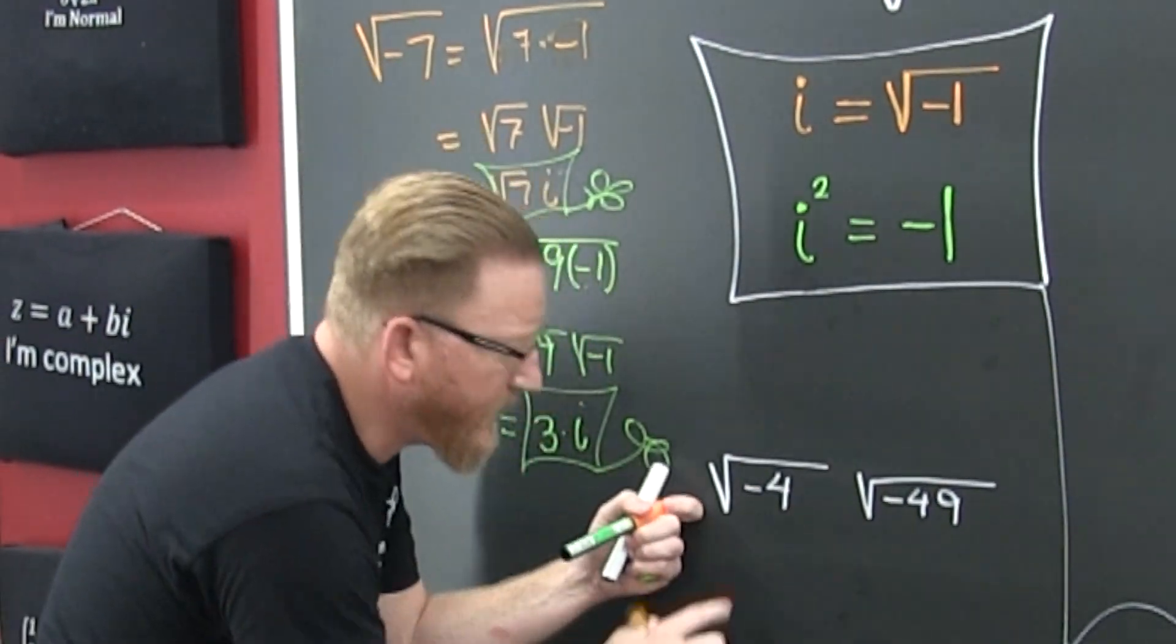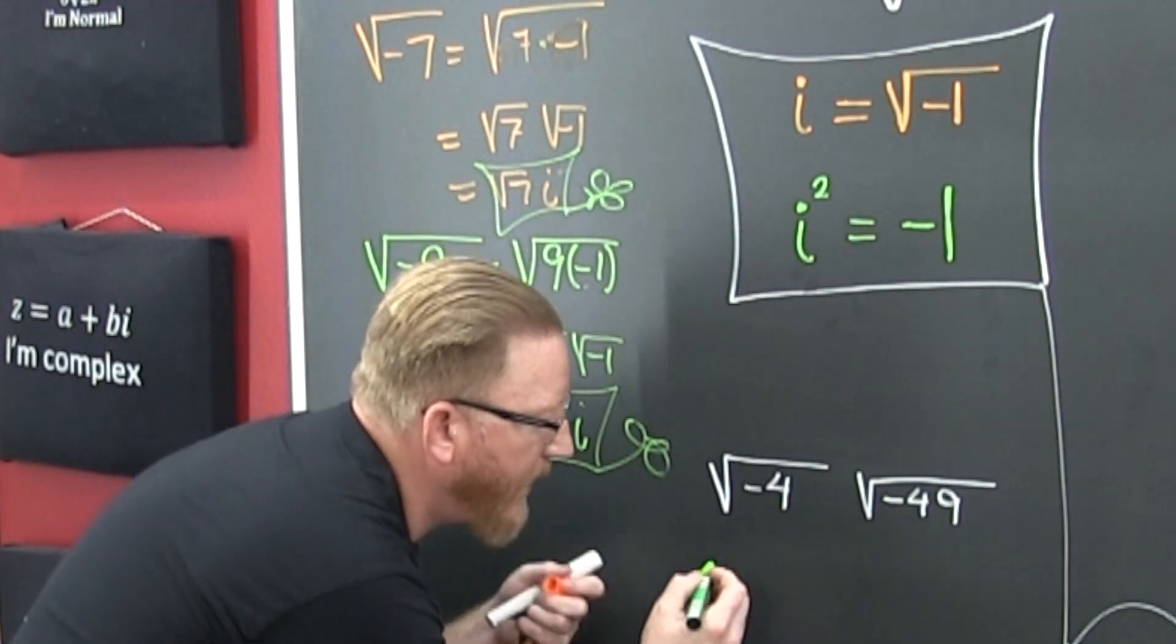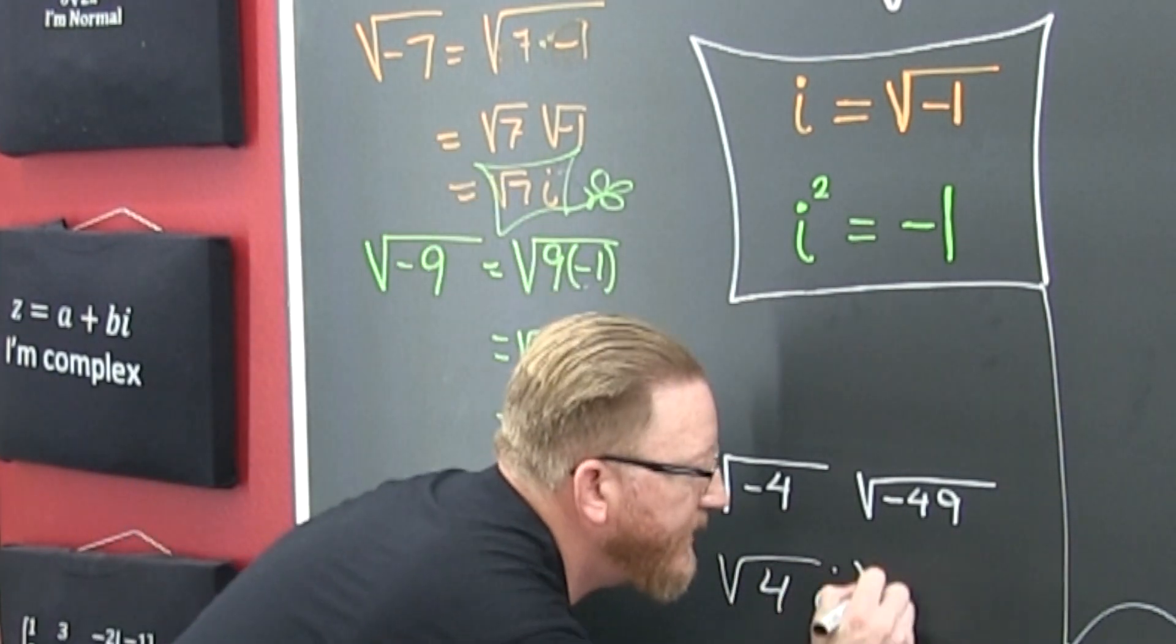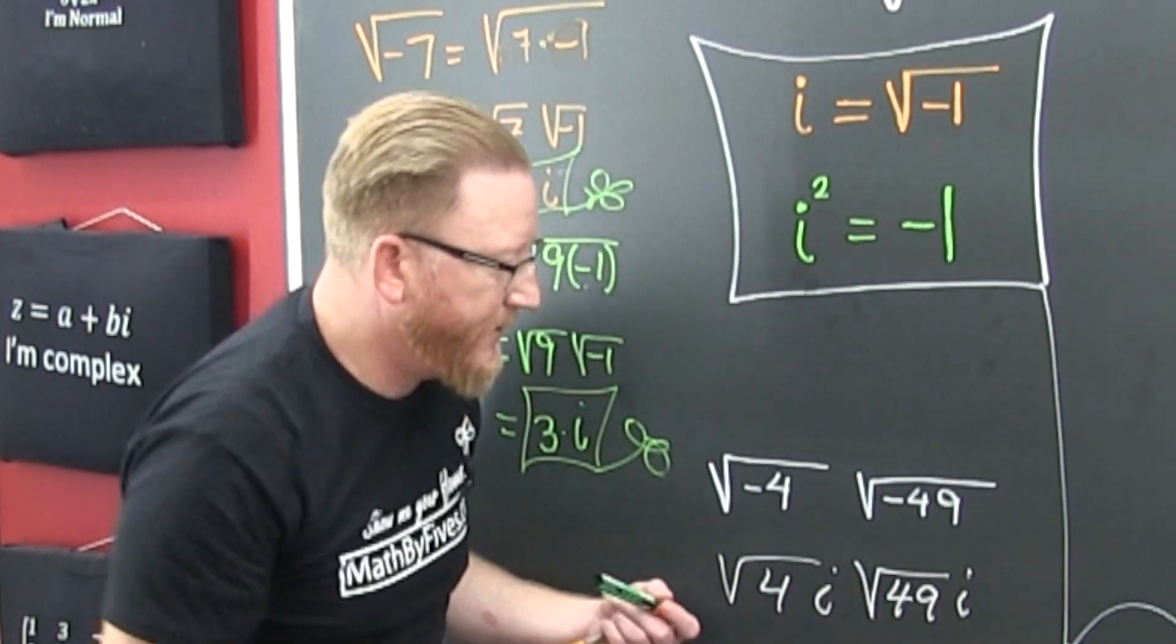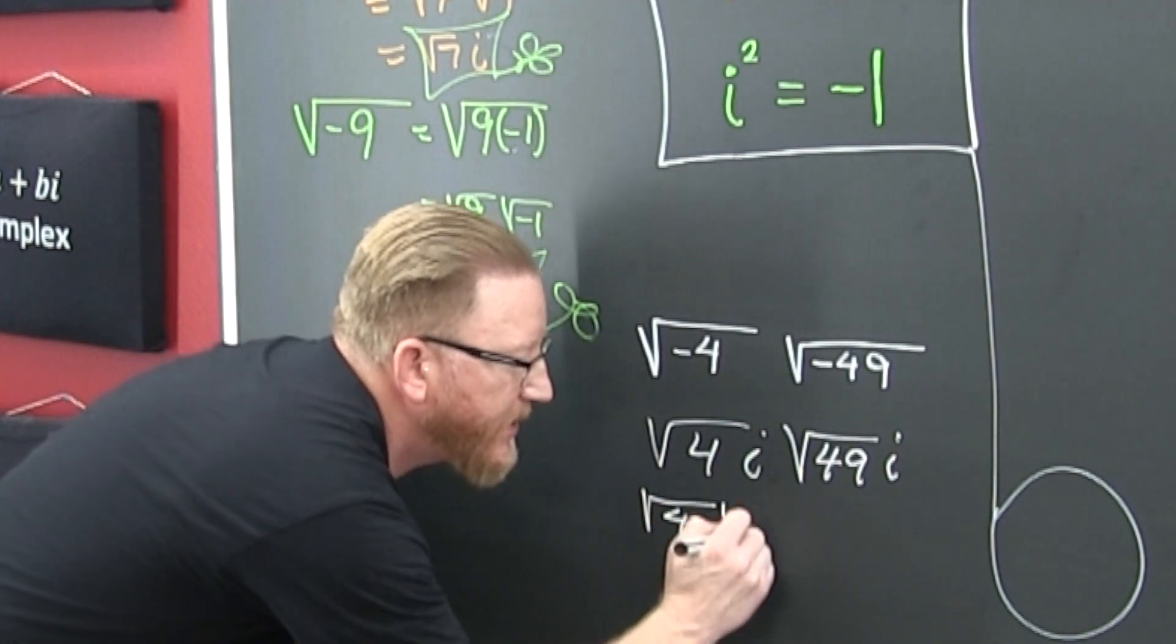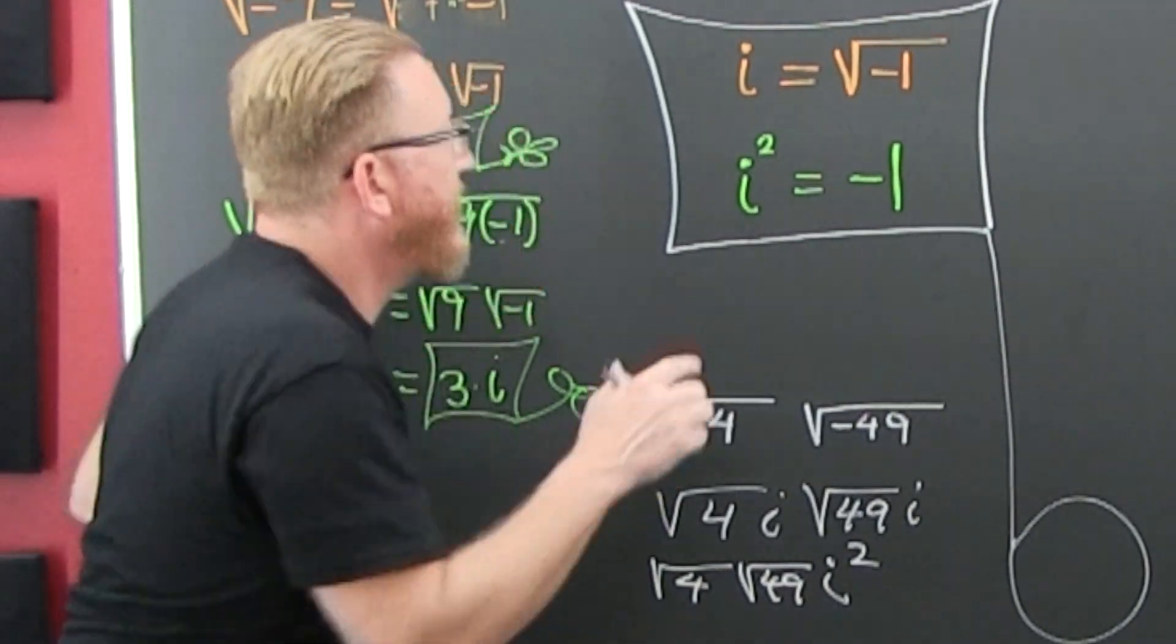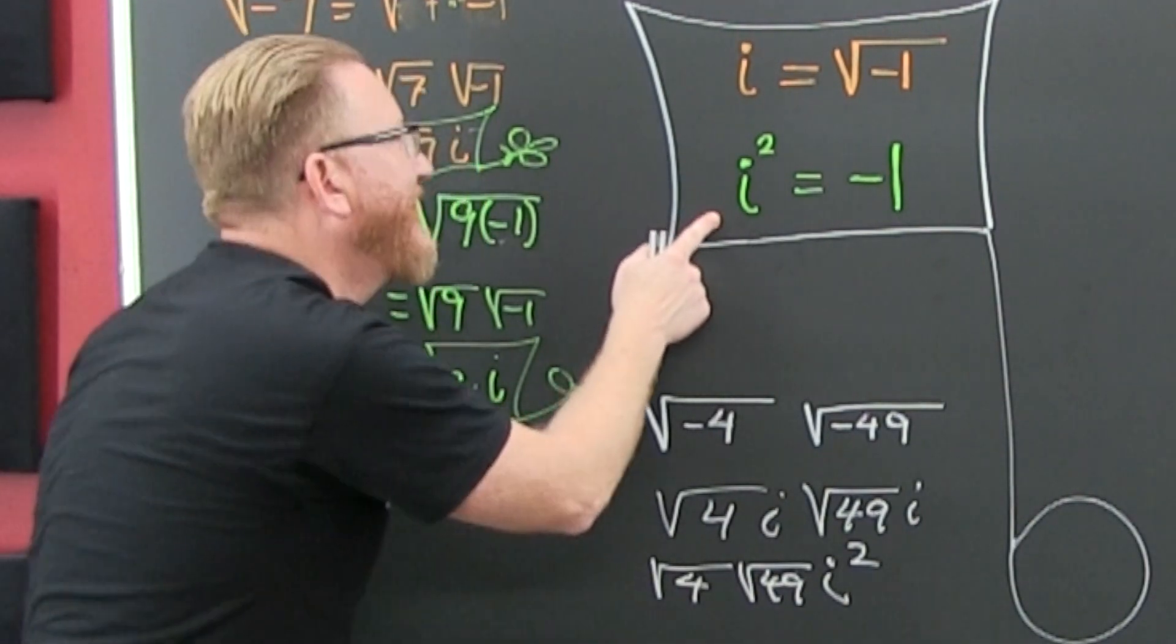I'm going to do the same thing. I'm going to pop an i out. It's all good until somebody loses an eye. There's one. And then it's all good until somebody loses an eye. There's another one. Now we can call that the square root of 4 times the square root of 49 times i squared.